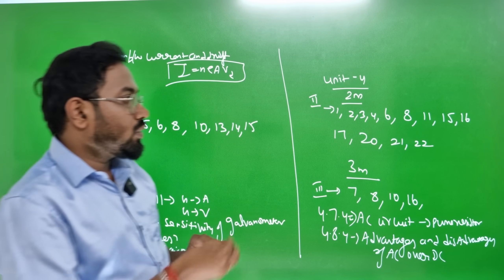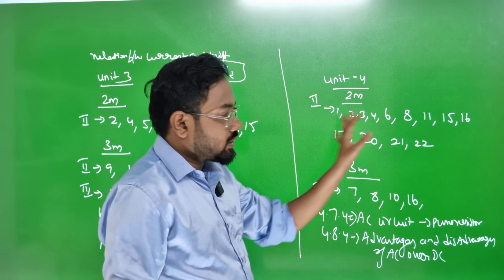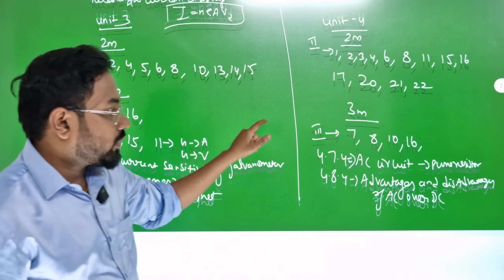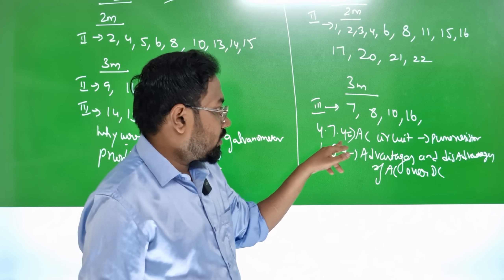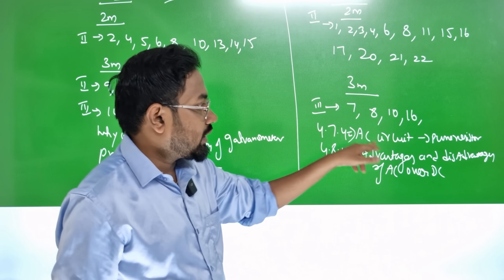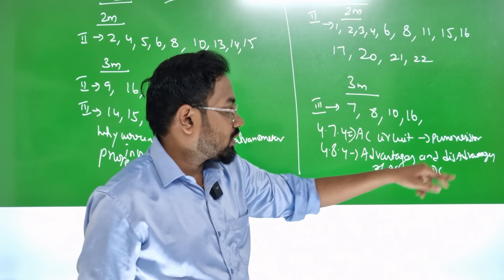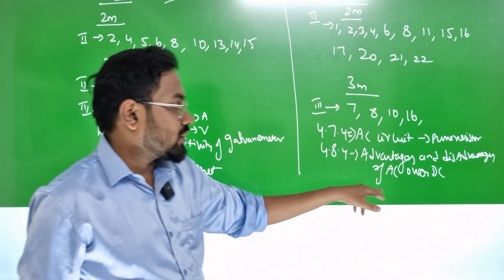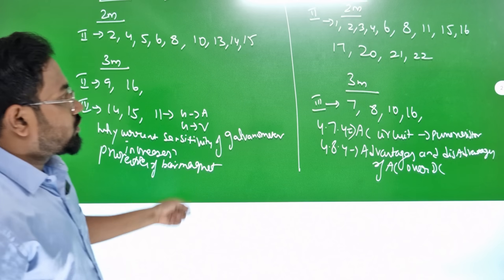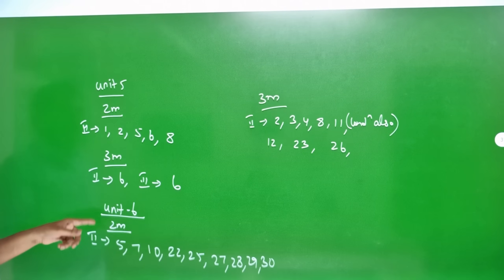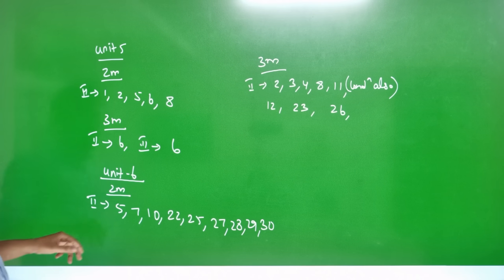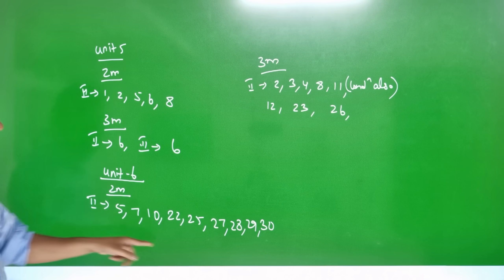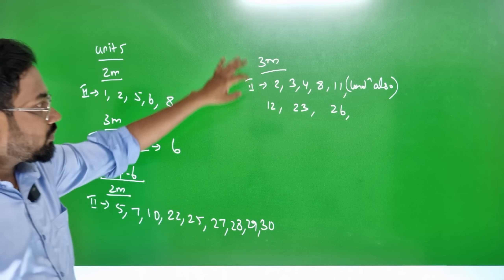Fleming's left-hand rule and right-hand rule are important. If you study this, you will not have extra difficulty. For 3-mark questions, there are paragraph numbers. AC circuit with pure resistor, inductor, or capacitor is in the fourth lesson. For the 5th lesson, study 2 marks. In Unit 6, study 2 marks and 3 marks.